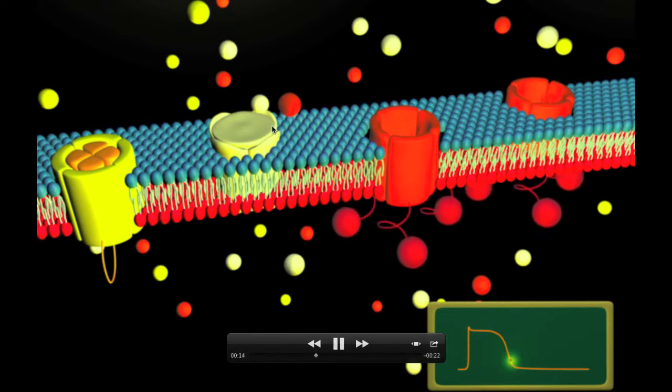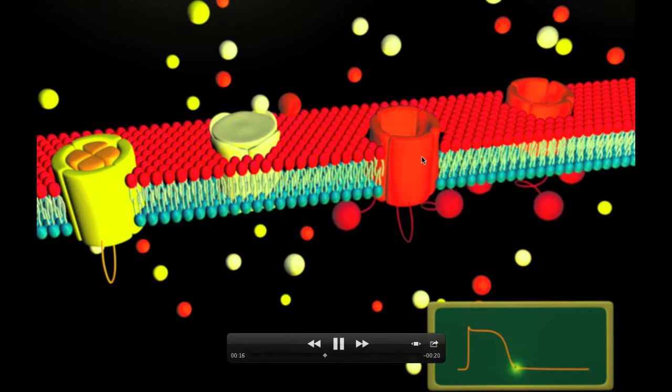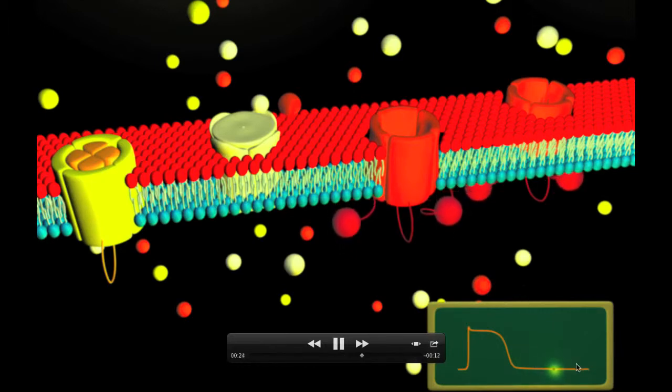During the repolarization phase, calcium enters the cell and potassium exits the cell. There are fast and slow potassium channels, and during diastole these channels are closed.